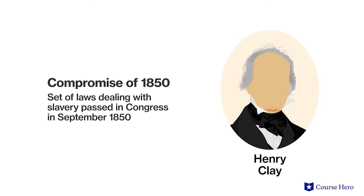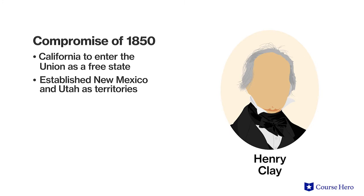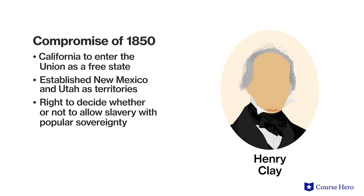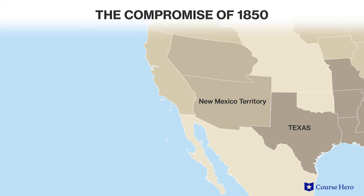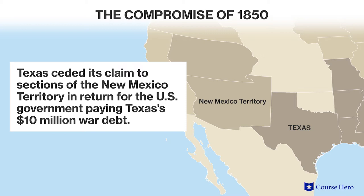This gave Kentucky Senator Henry Clay the opportunity to try to appease both sides with the Compromise of 1850, which admitted California as a free state, established New Mexico and Utah as territories with the right to determine whether to allow slavery through popular sovereignty, passed the Fugitive Slave Act which forced the federal government to capture runaway slaves, and abolished the slave trade in Washington, D.C. Through the Compromise of 1850, Texas also ceded its claim to sections of the New Mexico Territory in return for the U.S. government paying Texas' $10 million war debt.